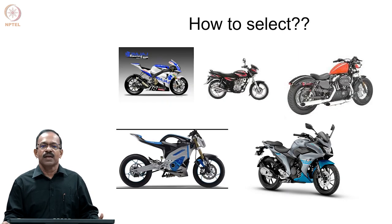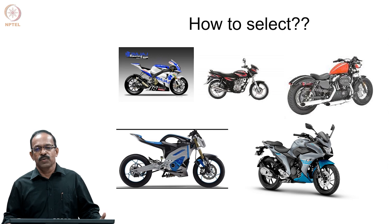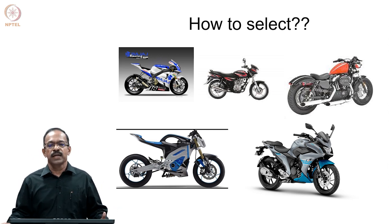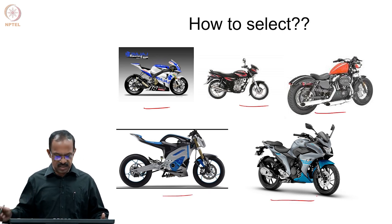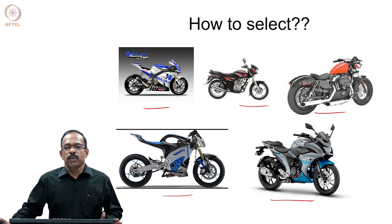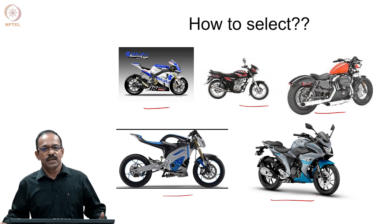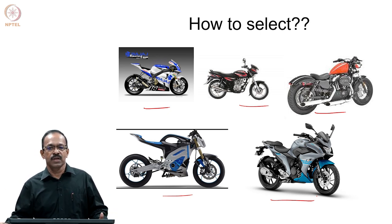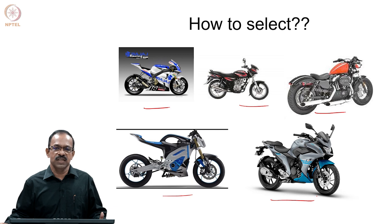To explain this, let us take a simple analogy of what we normally do when choosing something. For example, you want to buy a bike and you have a lot of choices. Suppose you have five bike models available — you want to buy the best bike possible for you. It is not that you want the best of everything, because you have your own limitations. You may have some criteria or preferences, and you look at those to decide which one is best for you.